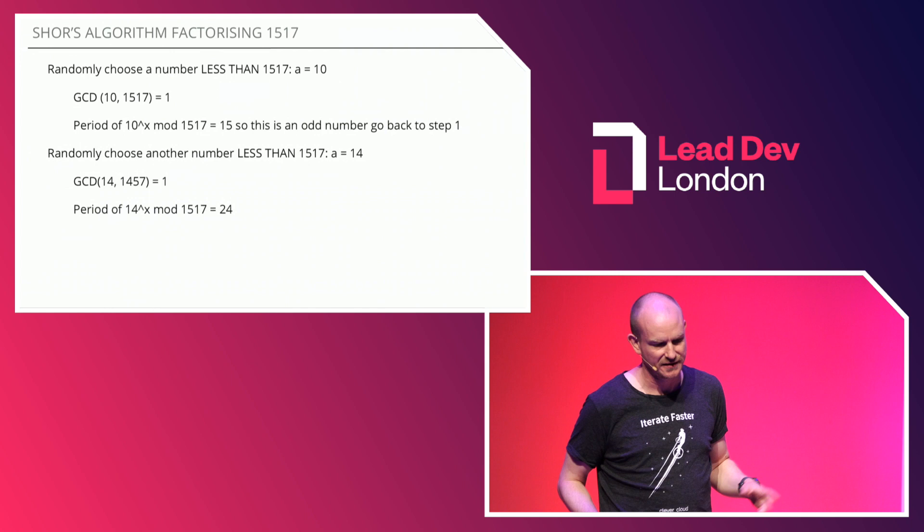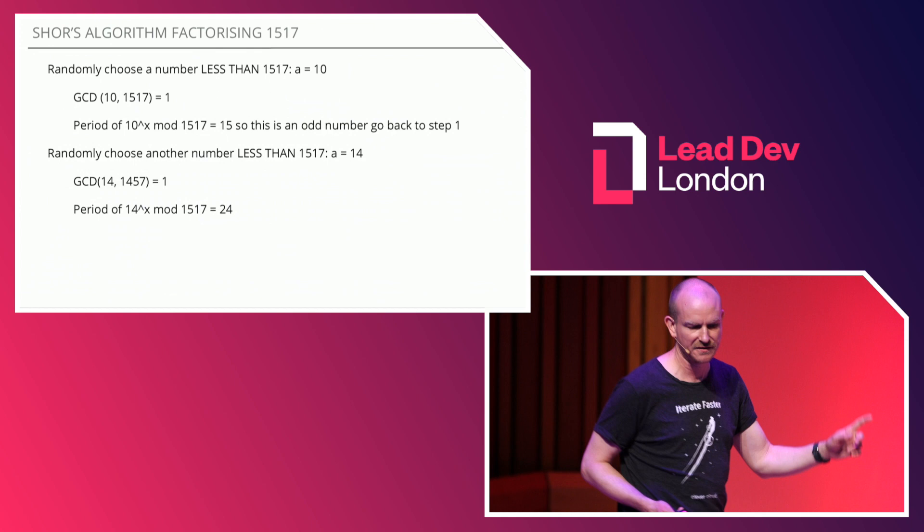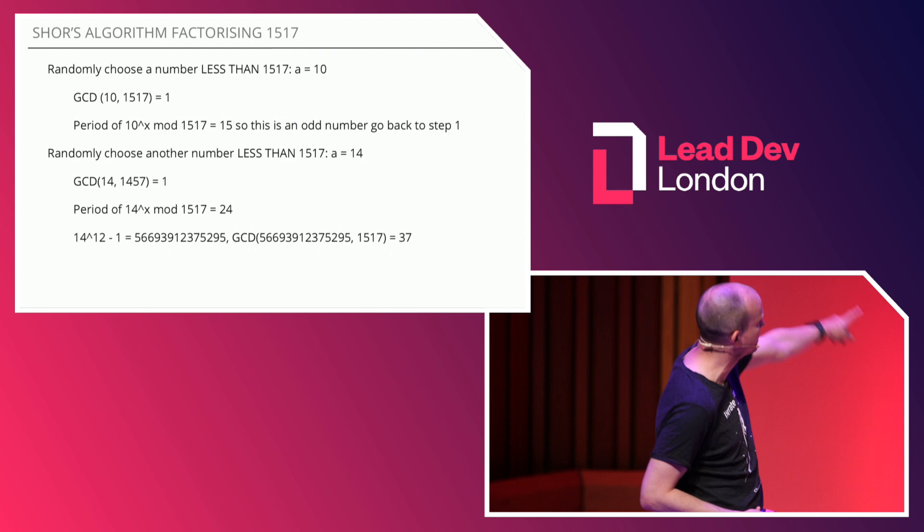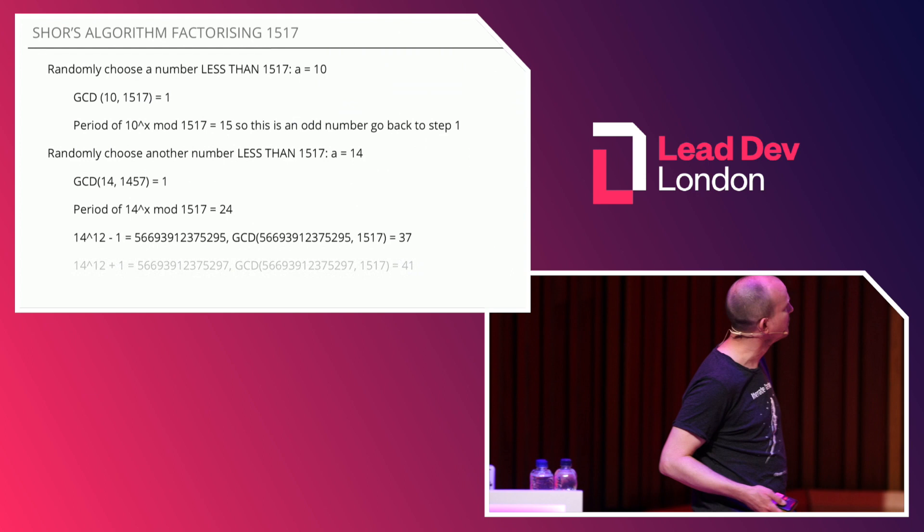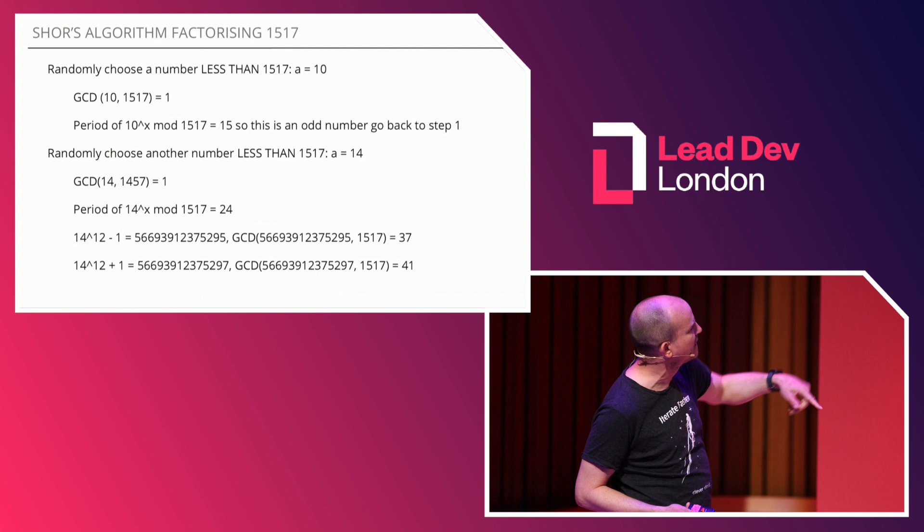The period of 14 is 24. That tells us that 14 to the 12 plus 1 and 14 to the 12 minus 1 will give us the factors. Those are very big numbers in that spreadsheet. The greatest common divisor of that big number with 1,517 is 37; the other factor is 41. That's the factors.